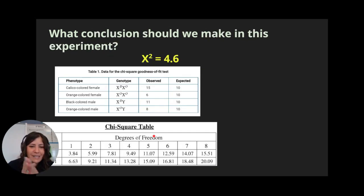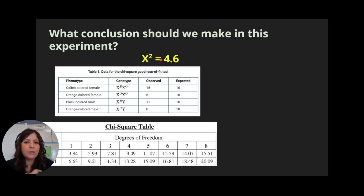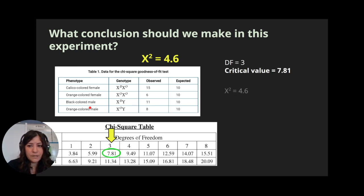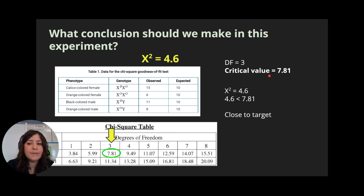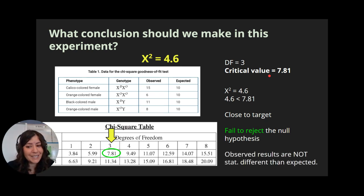Let's bring it all together. Let's say we actually do the cross, mate all these cats, count the number of offspring, and calculate our chi-squared value, getting a result of 4.6. So we're 4.6 off from the target — was our prediction close enough or were we far off? To find the critical value, there are four phenotypes minus one, giving us three degrees of freedom, and using p equals 0.05, our critical value is 7.81. Since 4.6 is less than 7.81, our chi-squared is less than our critical value, which means we're close to our target and we fail to reject the null hypothesis. Our observed results are not statistically significantly different than what we expected.